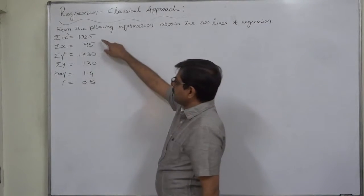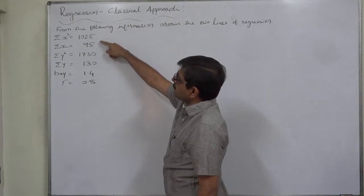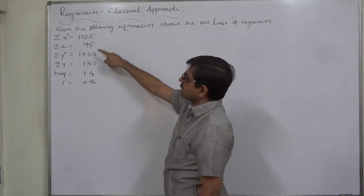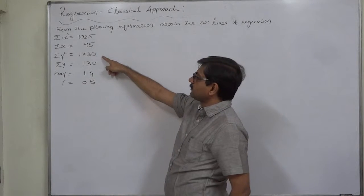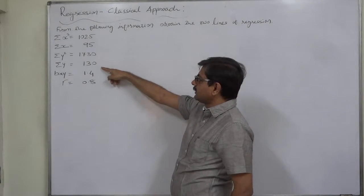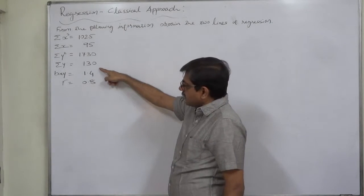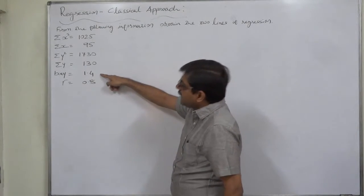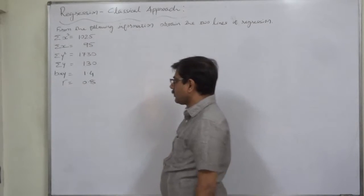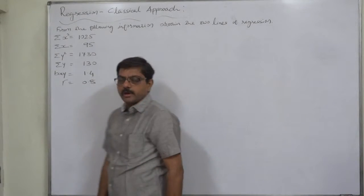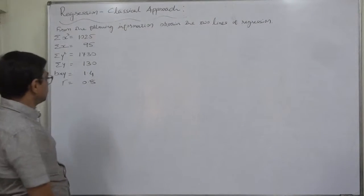The information available is: sigma x squared = 1025, sigma x = 95, sigma y squared = 1730, sigma y = 130, bxy is readily available as 1.4, and coefficient of correlation rho = 0.8.